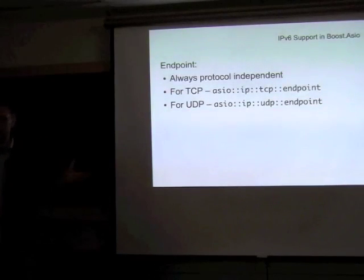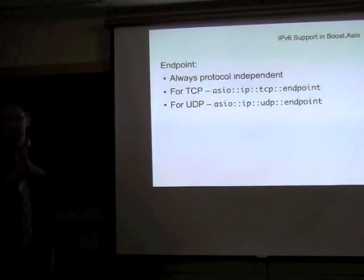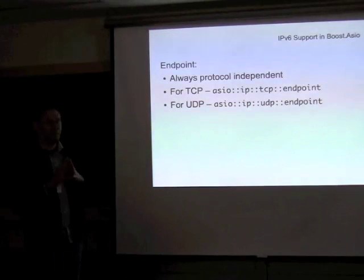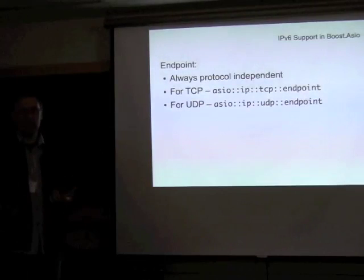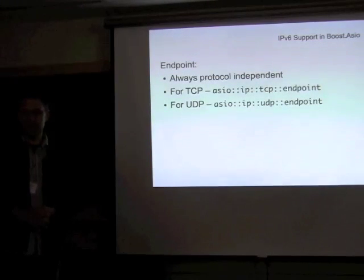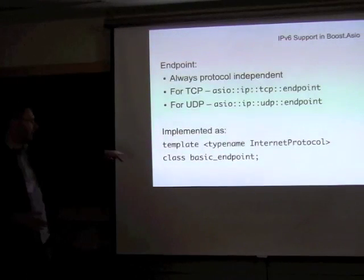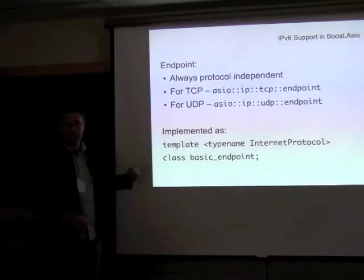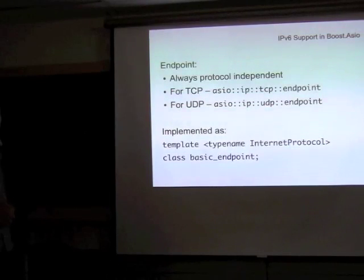So we have those three components — the protocol, the address, and the port number — put together as the endpoint type. There are separate endpoints for TCP and UDP. They're used in a completely protocol-independent way; they're actually implemented using a template with type-defs. This also means that if you need to extend it for additional internet protocols like ICMP (which ASIO does support natively) or SCTP, this is the starting point.